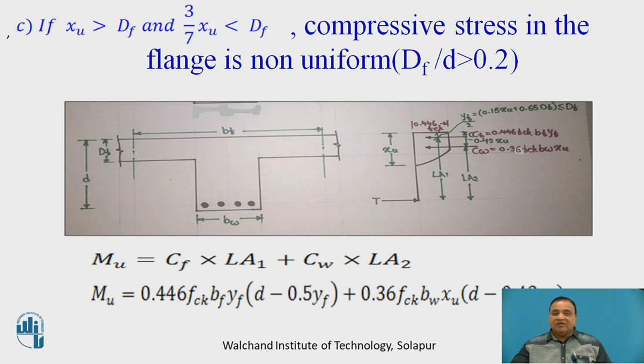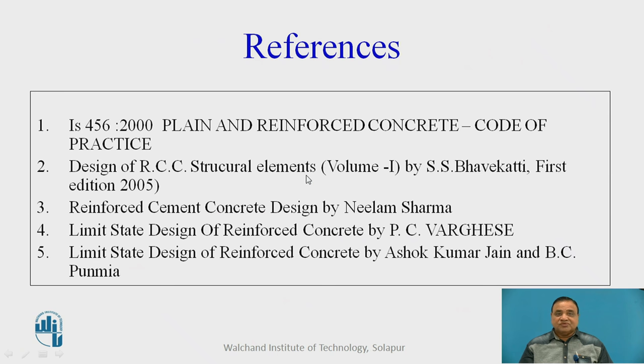In this way we can find out moment resistance of the flanged sections, that is T beam or L beam. The difference between T beam and L beam is T beam is having flange on both sides. L beam having only flange on only one side. These are the references used for preparing this particular note.